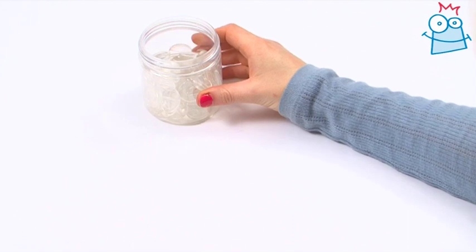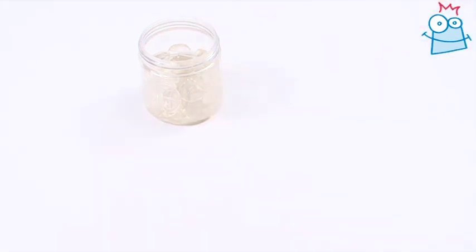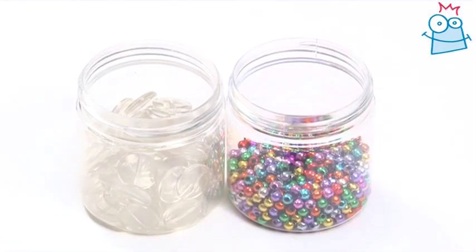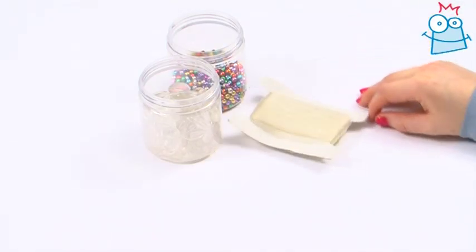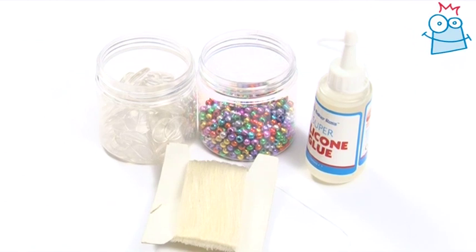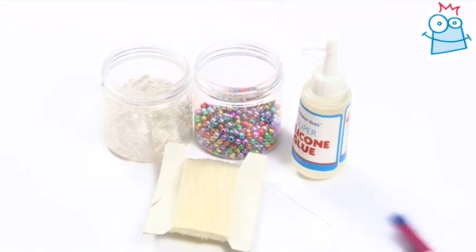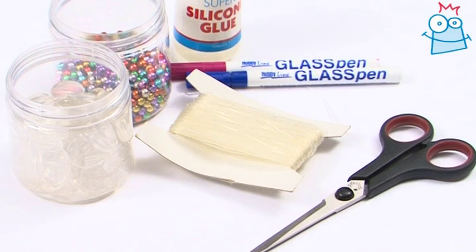For this project you'll need glass painting disc beads, colored metallic beads, elastic thread, silicone glue, Hobbyline fine tipped glass pens, and a pair of scissors.